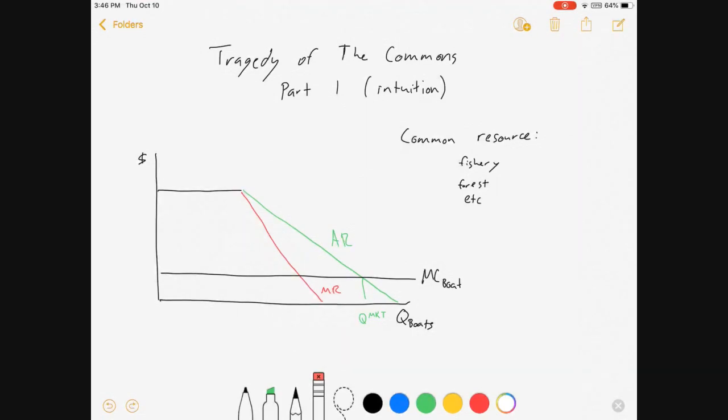Something that you'll notice if you've taken other micro classes is we're usually more interested in the point where marginal revenue equals marginal cost. An outcome that is better for this industry is here. If we choose the point where marginal revenue equals marginal cost, if we choose the number of boats that maximizes the well-being of this industry, then we get this optimal quantity here. Now, you'll notice that the optimal quantity is less than the market quantity, and this is the tragedy of the commons in a nutshell. Too many of us use the good, or use the common resource, and the outcome we get is actually less beneficial for our industry than if less of us actually went fishing.